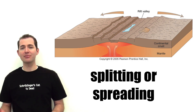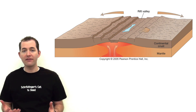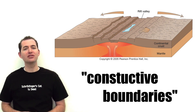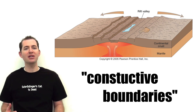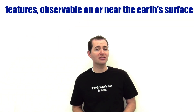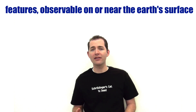Divergent boundaries are characterized by the splitting or spreading of plate boundaries. Divergent boundaries are also known as constructive boundaries because they build new crust. Each plate boundary is characterized by features that can be observed on or near the Earth's surface.